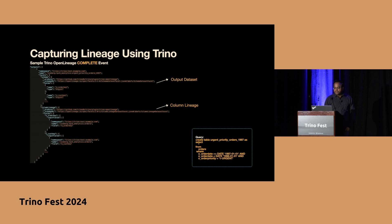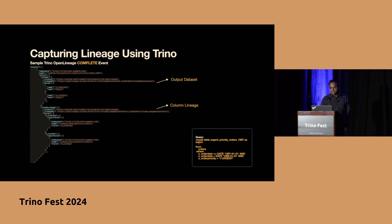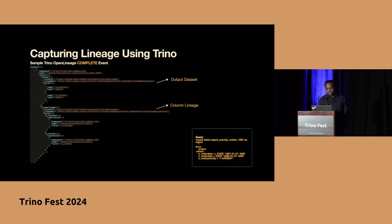The same applies for the output dataset as well. Along with the schema metadata, there are further details about column lineage using the built-in column lineage dataset facet, which maps input dataset columns to output dataset columns.